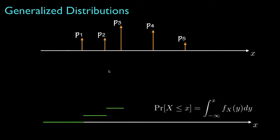We'd stay there until we get to the next delta function, at which point we'd jump by an amount equal to P3. Then we'd keep doing this until we finally include the final delta function and attain the cumulative probability equal to one.